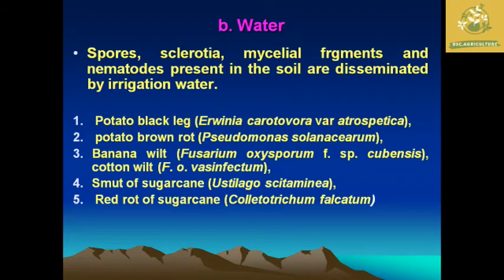For water dispersal, spores, pycnidia, and mycelial fragments are carried by water. Nematodes present in soil are also disseminated by irrigation water and can spread to nearby fields through it. Examples of water-transmitted diseases include potato black leg, potato black rot, banana wilt, smut of sugarcane, and red rot of sugarcane.